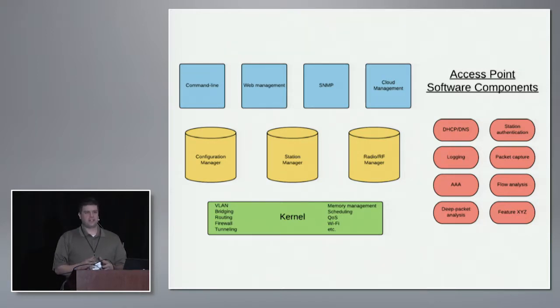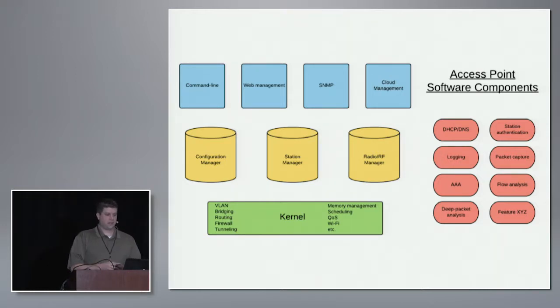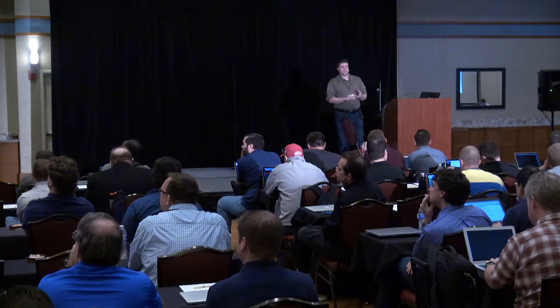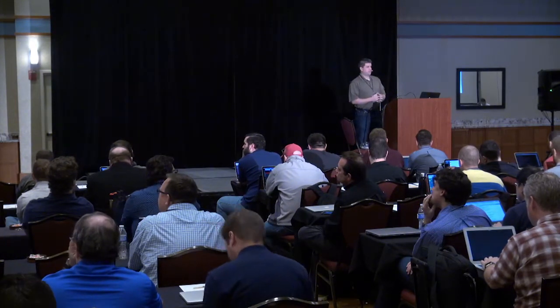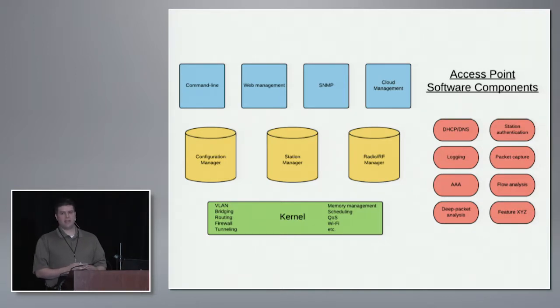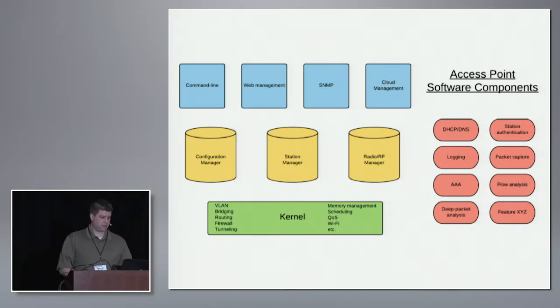The problem with it is it's not very easy to use if you have to turn all the knobs and twiddle all the bits yourself. An enterprise software engineering group will add the components in yellow and blue, which are your management interfaces — your command line, your web interface, your cloud interface — and also an overlay management for all of your access points. At the single system level, we improve how stations are managed, how the RF is managed, how the individual radio settings are done, and then we provide a configuration that's familiar if you're familiar with other networking devices.